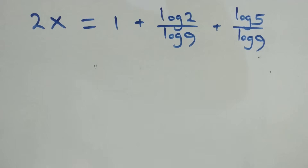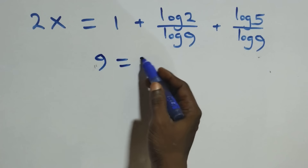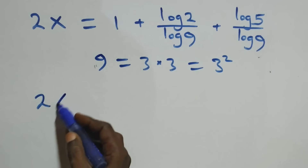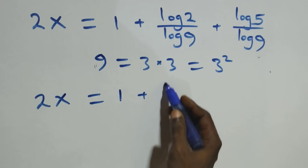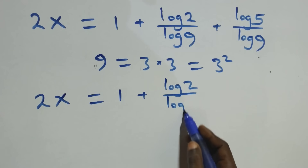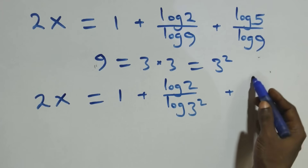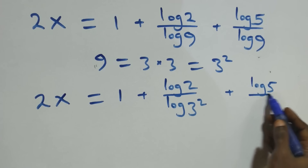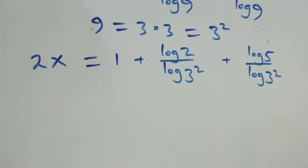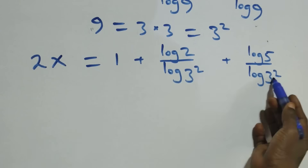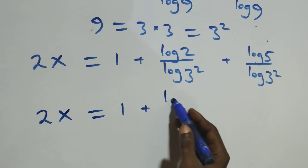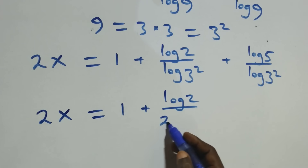Then we can write 9 as 3 times 3, which is the same as 3 squared. So what we have becomes 2x equals 1 plus log 2 over log(3 squared), plus log 5 over log(3 squared). Applying the power rule of log, the 2 comes down, giving 2x equals 1 plus log 2 over 2·log 3.